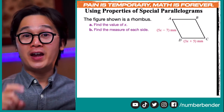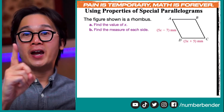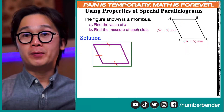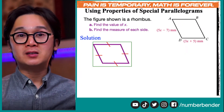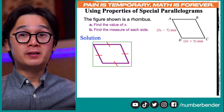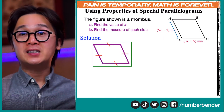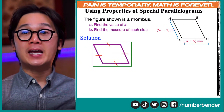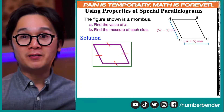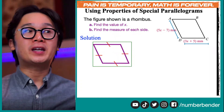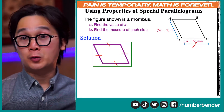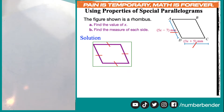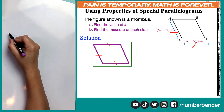We need to find the value of x and to find the measurement of each side. So let's bring out the property of a rhombus, which means the sides of a rhombus are congruent. This is important because we know that line segment AD, which is represented by the expression 5x minus 7, and line segment BC, which is 3x plus 5, can be equated because we know that they are congruent. Since they have the same measurement, let's use that clue to find the measurement of our sides.